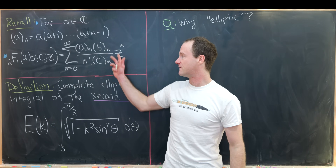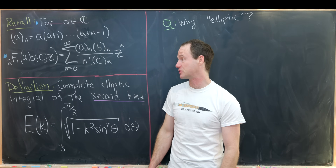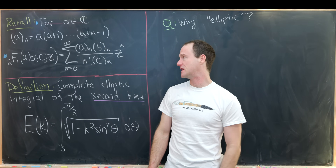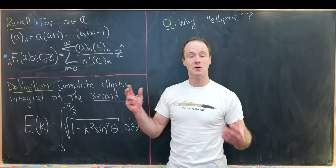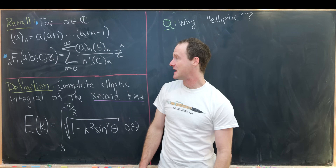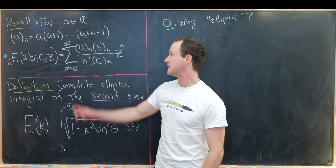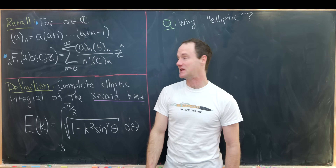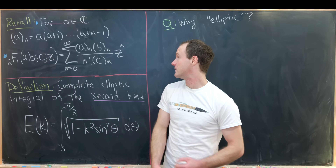Then we can define the hypergeometric function. In the previous video, we looked at why it's called a hypergeometric function and a couple of other things. In future videos, we'll dive into special cases and more well-known functions. So we've got F(2,1) with parameters a, b, c, and z equal to the sum as n goes from zero to infinity of (a)_n (b)_n over n! (c)_n times z^n. Here a, b, and c are parameters and z is the variable.